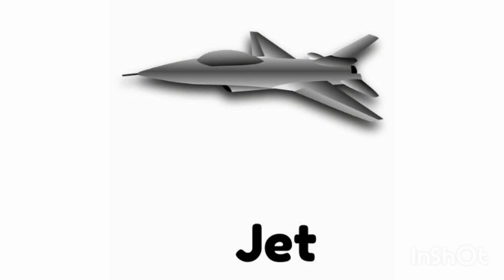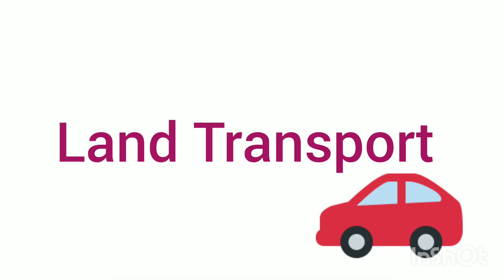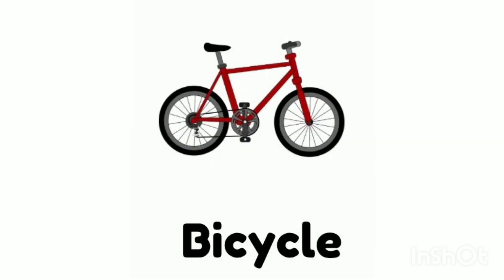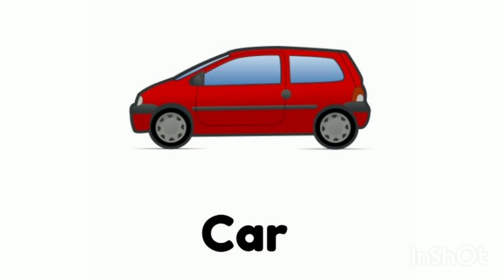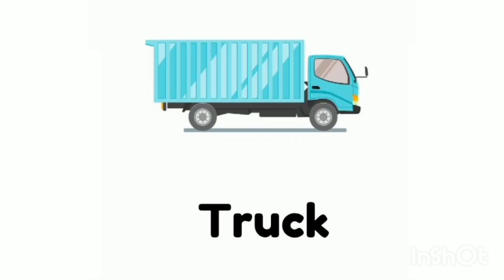Now let's see the land transport names. The first one is bicycle — look at the screen and repeat: bicycle. Next one is bus. Then car — this one is car. And the next one is truck — say: truck.